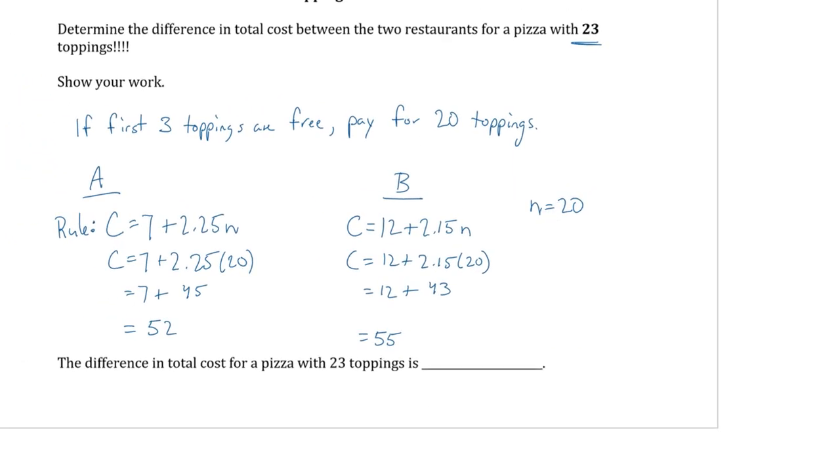Now, I'm going to go back and read the question again. Determine the difference in total cost between the two restaurants for a pizza. And we did a lot of this back where we did fractions and percentages, where we calculate the difference. So over here, I'm going to just write difference. The difference is 55 minus 52, which is $3. So the difference in total cost for the pizza with 23 toppings is $3. And A was the cheaper in that case. Sometimes it asks for which one is cheaper and what is the difference. It could ask all kinds of things.